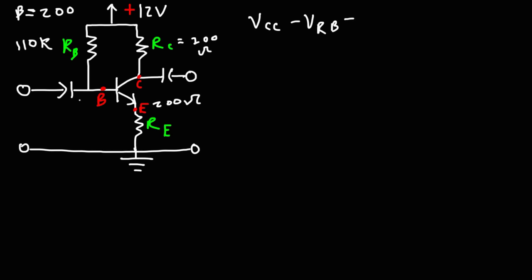From there, we travel through the transistor from the base to the emitter, giving a voltage drop of VBE — we'll use 0.7 volts, which can range from 0.6 to 0.7. Then traveling through RE to get to the ground, that's VRE, the voltage drop across the emitter resistor.